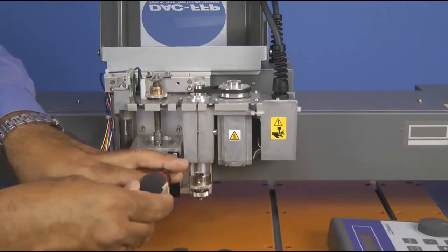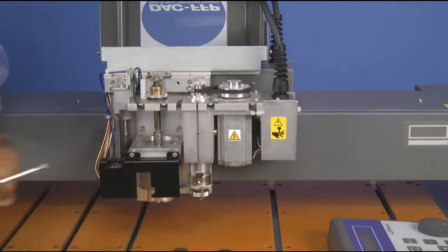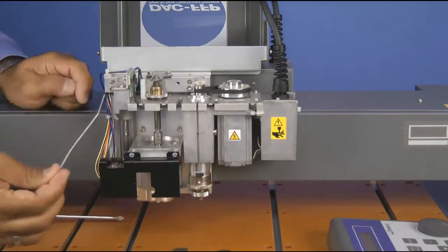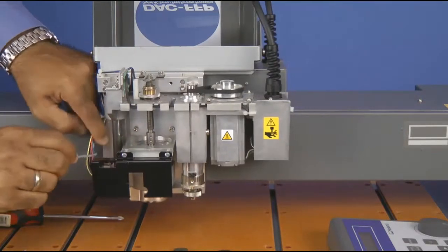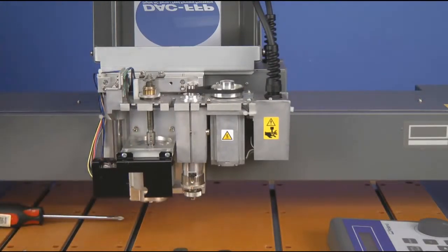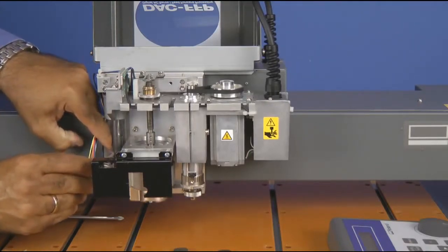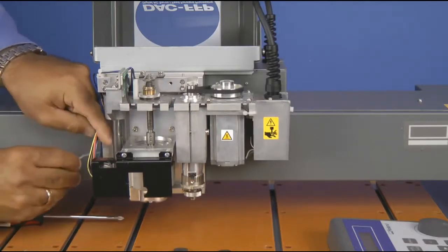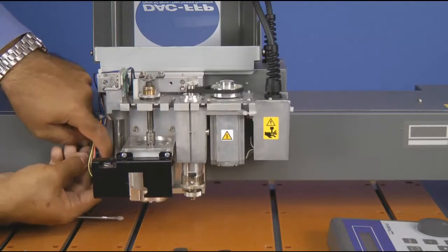At this point, once we have the cover switch plate remounted, we want to go ahead and take the excess wires and the supplied tie strap, and we want to strap those to the tie down holder. You want to go ahead and trim off any excess.